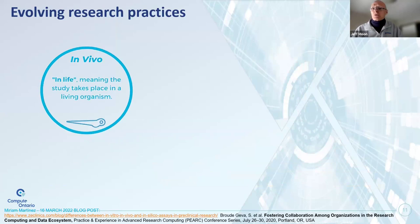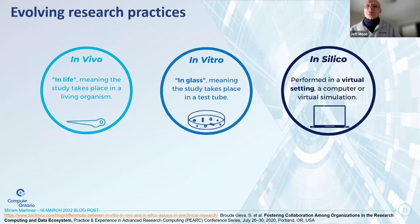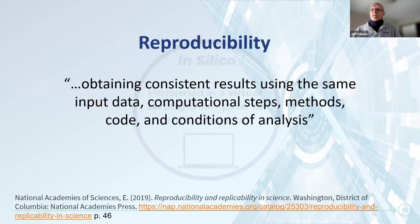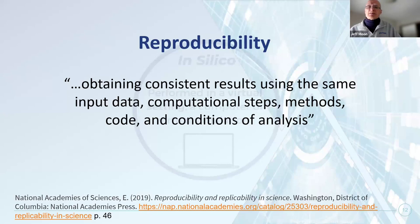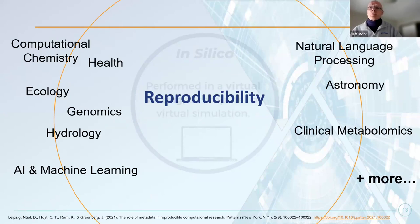We live in a world of evolving research practices, with research taking place in vivo, in vitro, and now increasingly in silico. Nowhere is this more true than in the context of high-performance computing being used for computational and data-intensive research across nearly every discipline. The National Academies of Science in 2019 defined reproducibility as obtaining consistent results using the same input data, computational steps, methods, code, and conditions of analysis. The need for reproducibility applies across all aspects of in silico research.